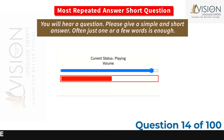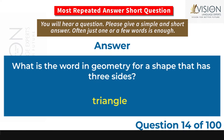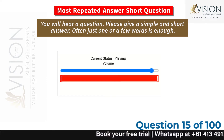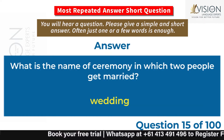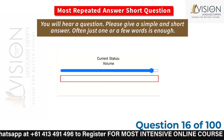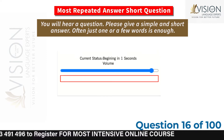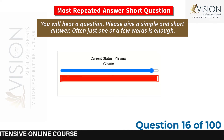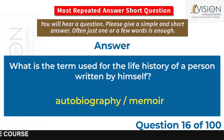What is the word in geometry for a shape that has three sides? Triangle. What is the name of a ceremony in which two people get married? Wedding. What is the term used for the life history of a person written by himself? Autobiography, memoir.